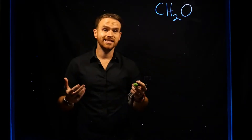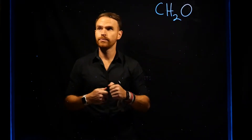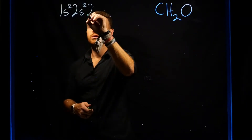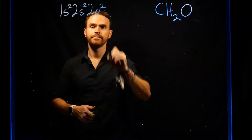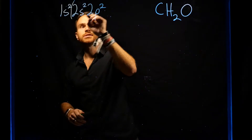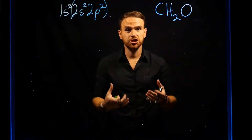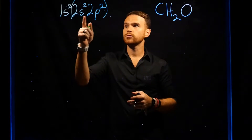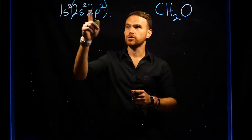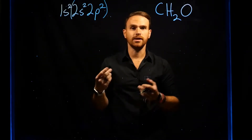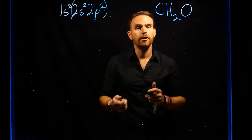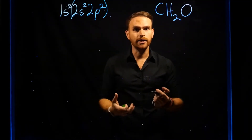Consider carbon, which is the sixth element on the periodic table. Its full electron configuration is 1s², 2s², 2p². The valence electrons are going to be all the electrons in this outermost shell, or valence shell, of orbitals. As we can see from the superscripts following each of the atomic orbitals, there are two electrons in the s orbitals and two electrons in the p orbitals. This means that carbon has four valence electrons.